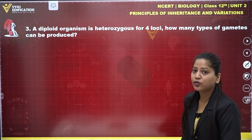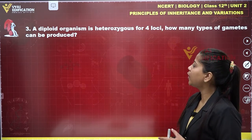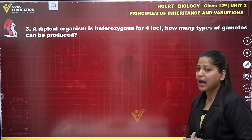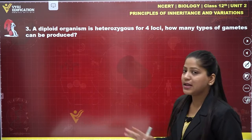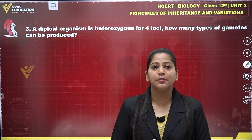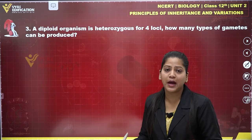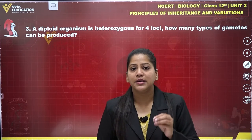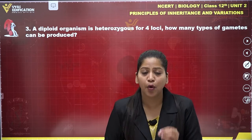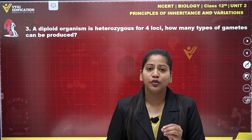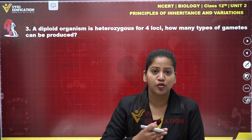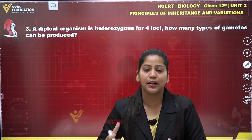Now let's come to question number three. A diploid organism is heterozygous for four loci — how many types of gametes can be produced? If any diploid organism is heterozygous for four loci, that means the organism is heterozygous for four characters. The gametes produced are based on the number of heterozygous characters in an organism.